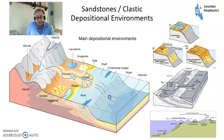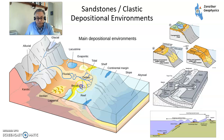So, depositional environments. You've got mountains where materials are eroded. You've got rivers depositing alluvial and fluvial sediments, and aeolian sediments within deserts. Then you've got the littoral area. You've got deltas coming into the sea. Then you've got shelf. And then you've got deep sea and slope. So these are a few key concepts in terms of deposition.